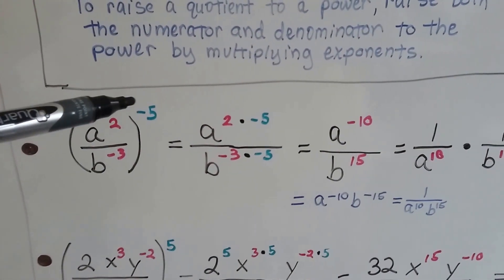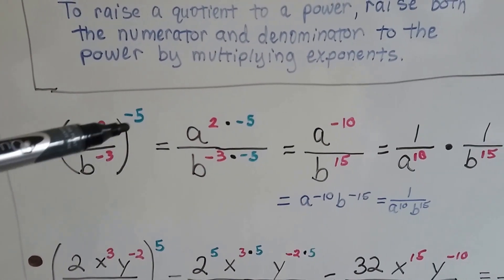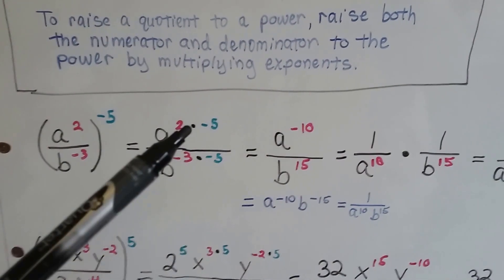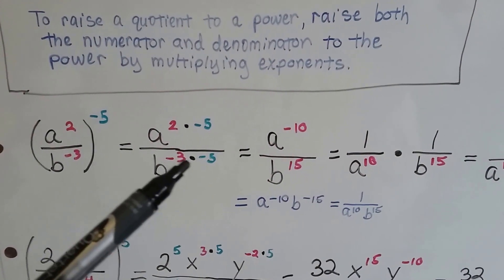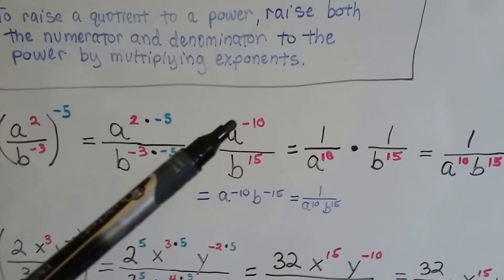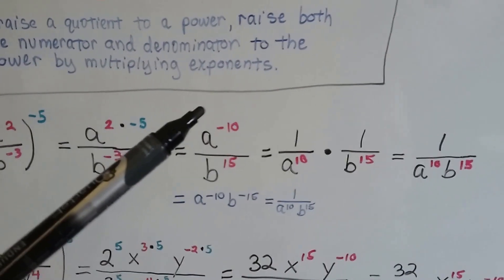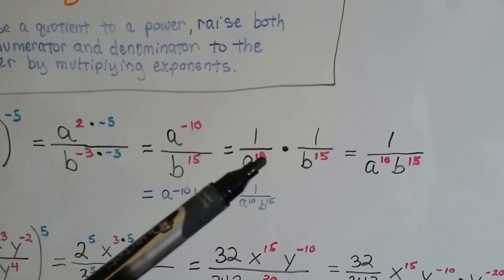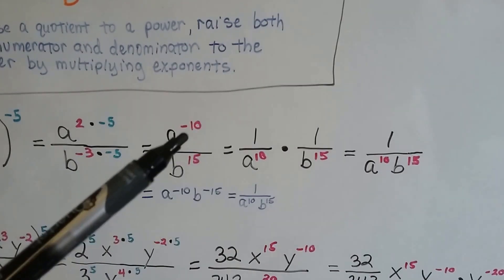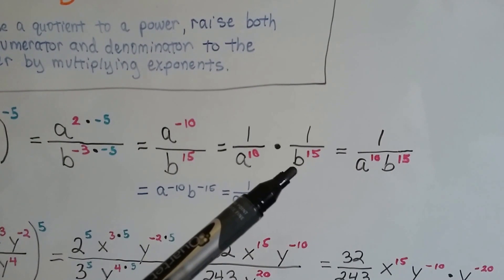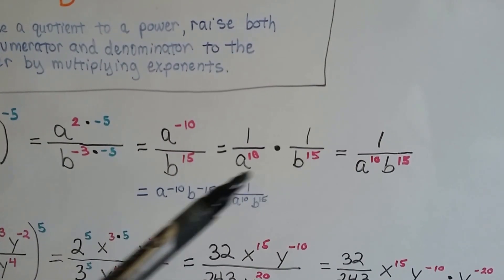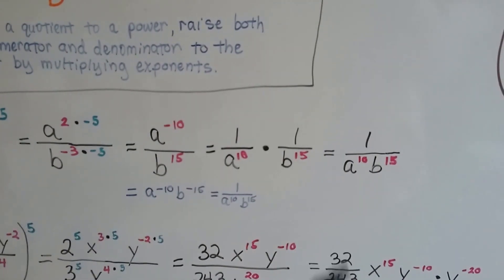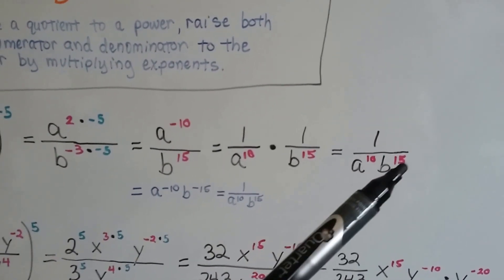We would multiply the 2 to the negative 5 and the negative 3 to the negative 5. We'd get negative 10 for this one, and we'd get a positive 15 for this one. We know this is a fraction. So technically what we're saying is 1 divided by a to the 10th — that's this part — times 1 divided by b to the 15th. And that's our answer: 1 divided by a to the 10th, b to the 15th.